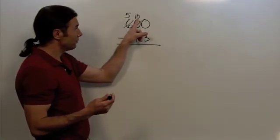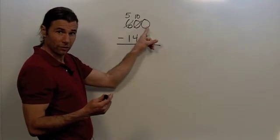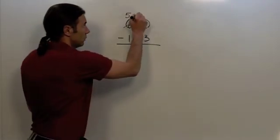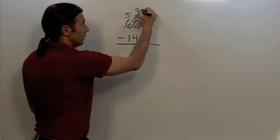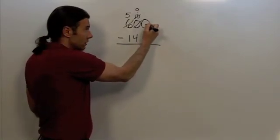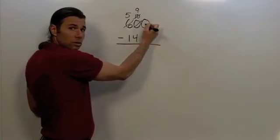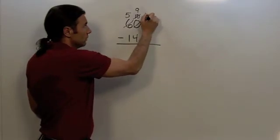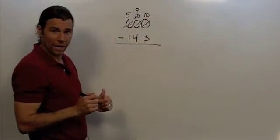Once this becomes a 10, now I can borrow from this 10 for the next place value. So I borrow from this 10, which is going to make it a 9. And now when I bring this 1 over to the next place value, it's going to add 10 to this value. That value is 0, so 10 plus 0 is going to make that a 10. Now I'm ready to subtract.